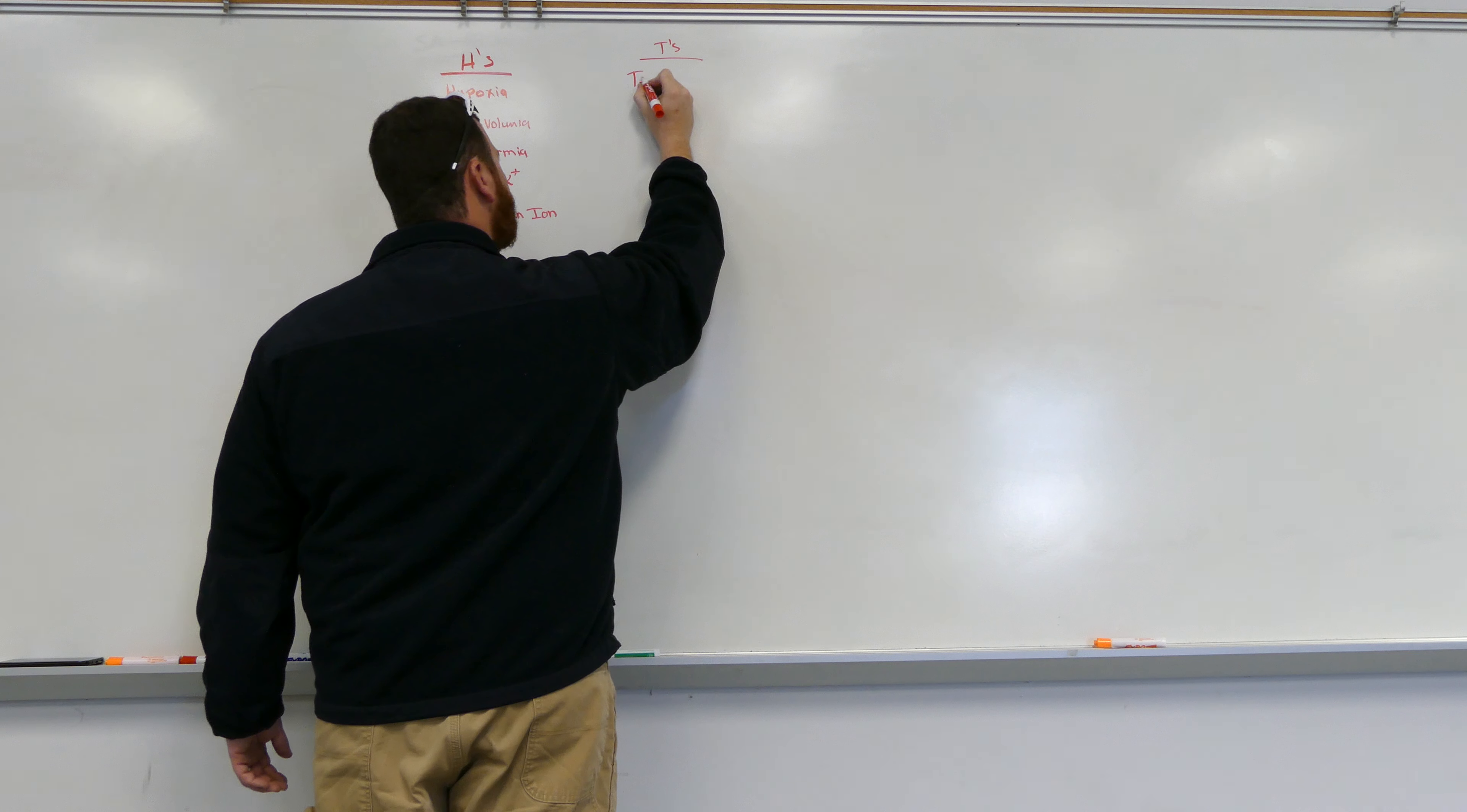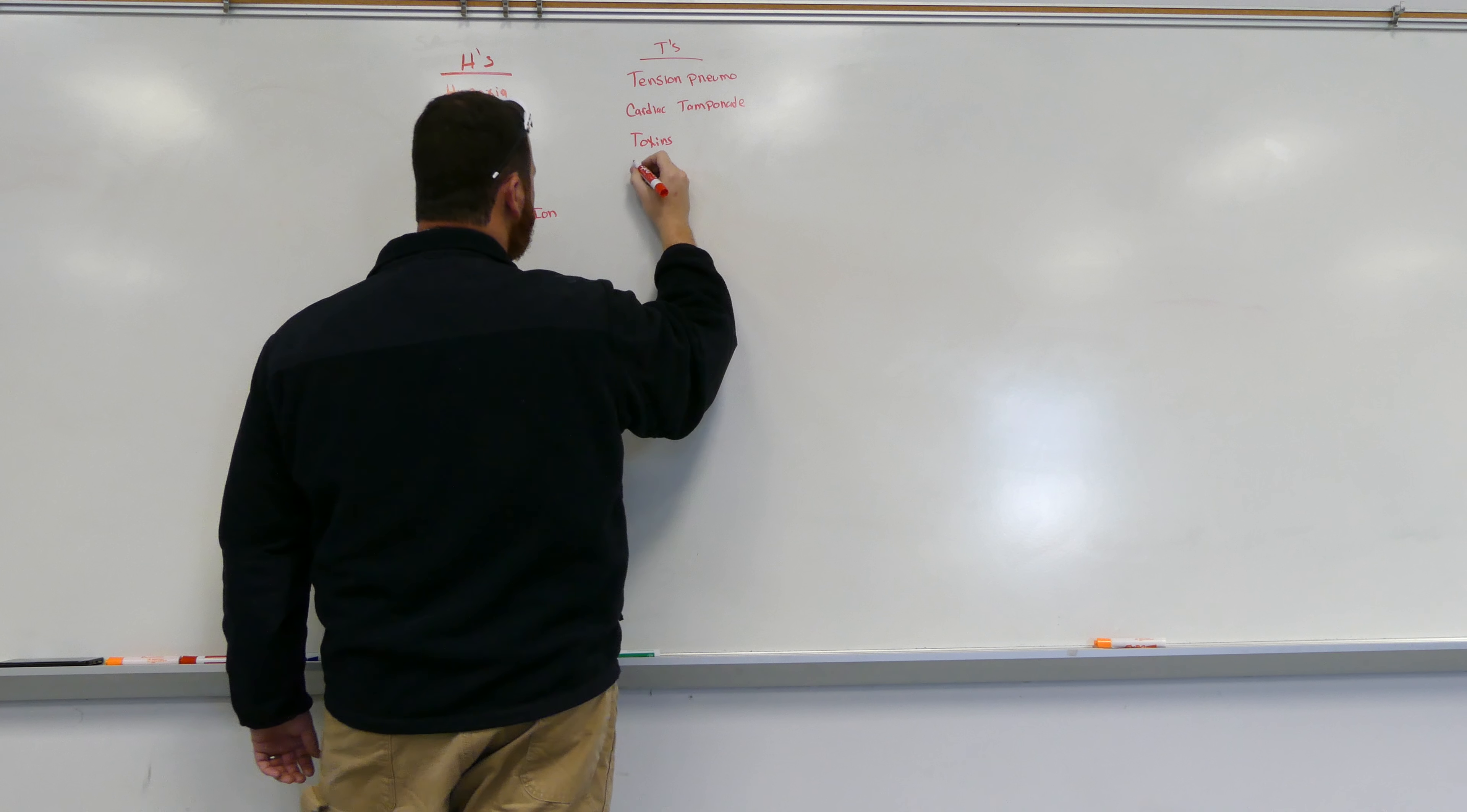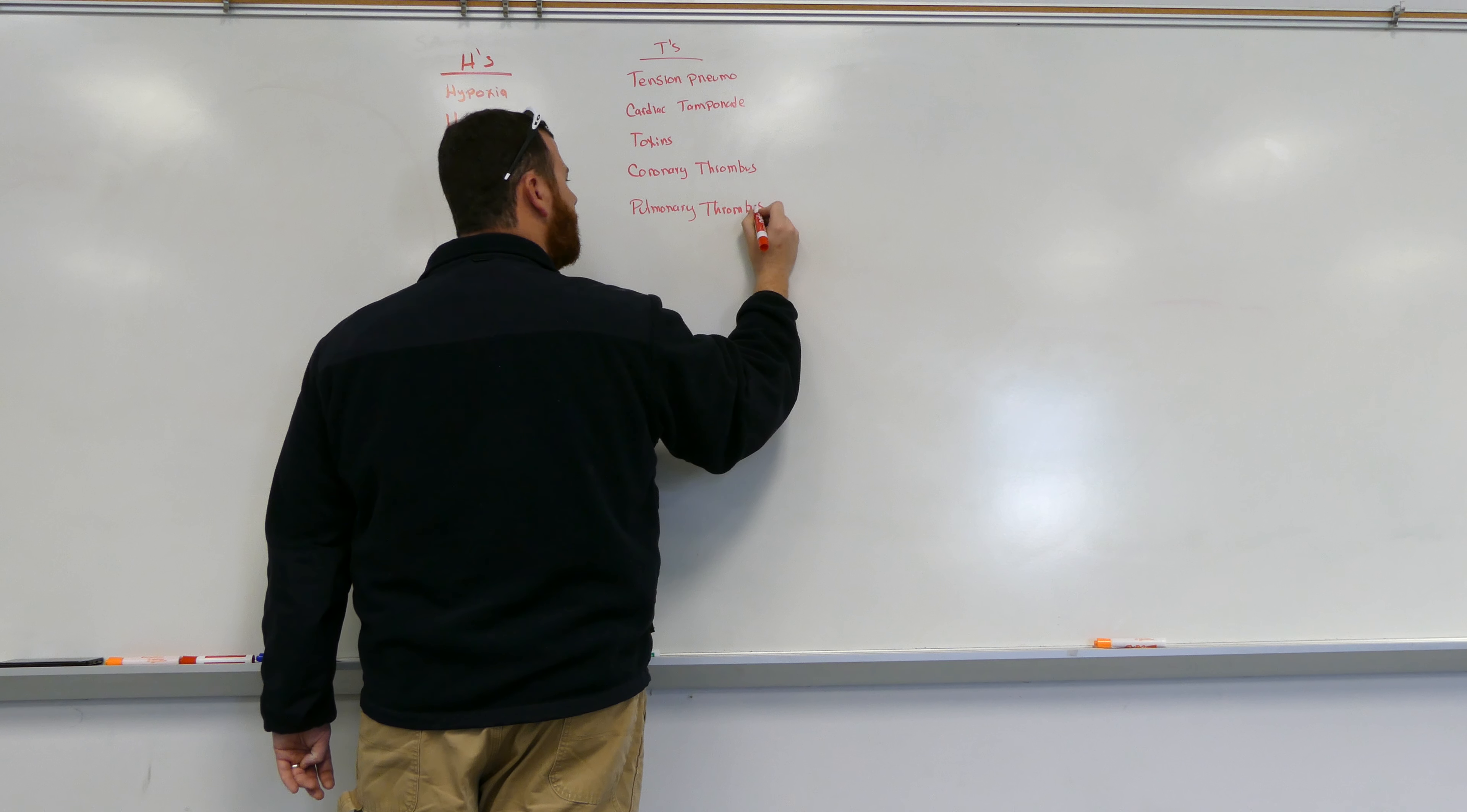The T's are tension pneumothorax, cardiac tamponade, and thrombus. We have two types of thrombus: coronary thrombus, which is a heart attack, and pulmonary thrombus, which is a pulmonary embolism. These are the H's and T's, not the only potentially reversible causes, but definitely contributors we need to think about.